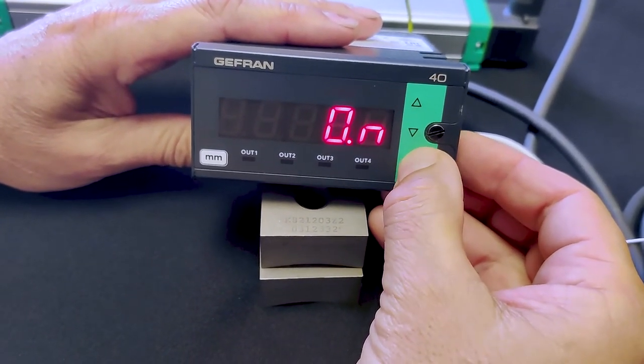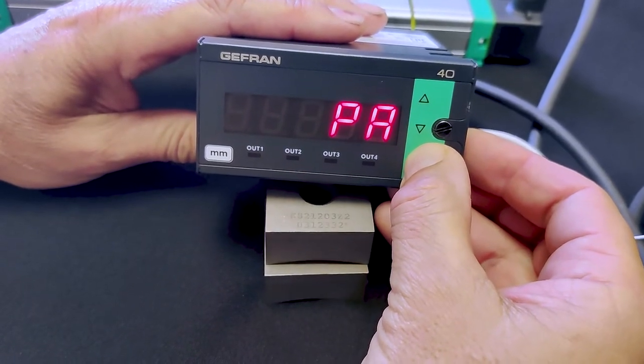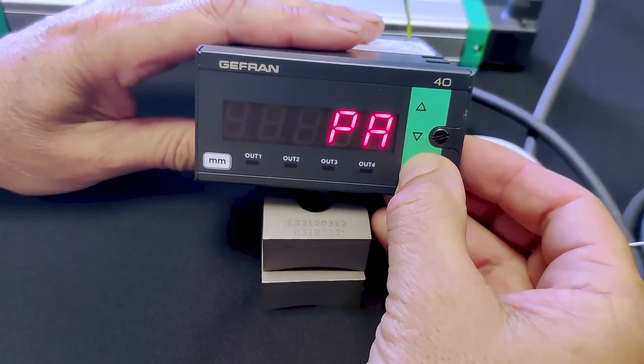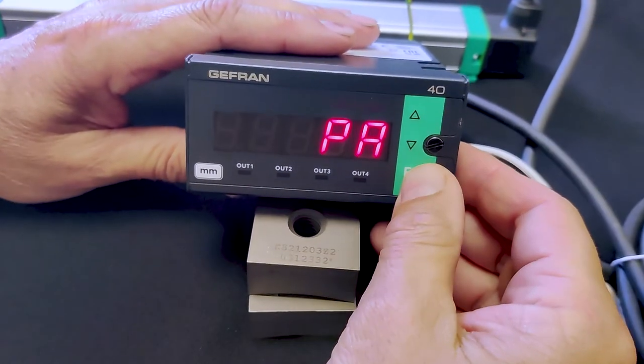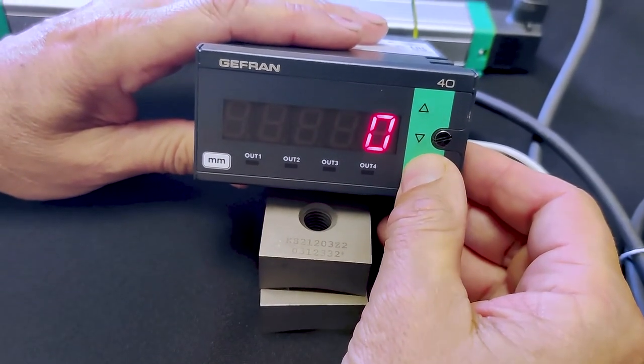If you need to do some fine tweaking of the distance or of the measurement because of a bracket or something at the end of the potentiometer, that would be done in the user calibration.